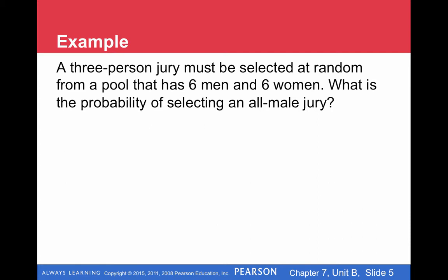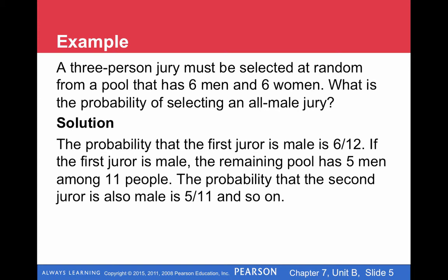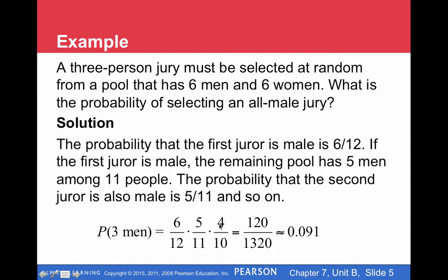So here's an example where we select people. A three-person jury must be selected at random from a pool that has six men and six women. What is the probability of selecting an all-male jury? We're asking for a three-person selection, so this means male, male, male — three probabilities that we need to multiply, but they're not going to be the same each time. The probability the first juror is male is six out of twelve. Assuming the first person is male, there are now only five men left among eleven people total, so the probability the second juror is also male is five out of eleven. Then the third juror — since the first two were male — there are now four males left out of ten. So the probability of getting three men in a row is six times five times four over twelve times eleven times ten, because we have one less male and one less total juror to select from.